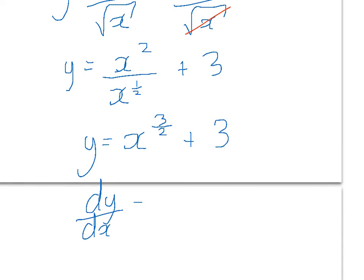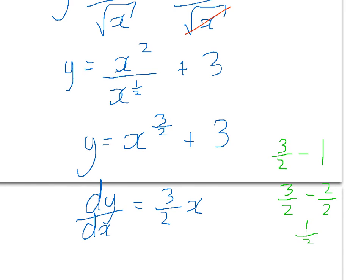Now differentiate: dy/dx. Multiply through by the power of three over two — this is where it gets a bit complicated because we need to subtract one from three over two. Doing the side work: three over two minus one equals three over two minus two over two, which is a half. So the power we're left with is a half. The constant three becomes three times x to the power of zero, so it vanishes.